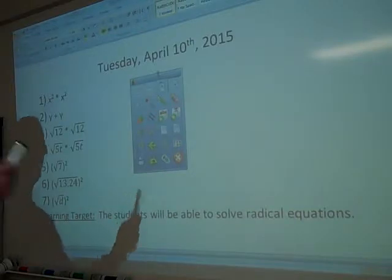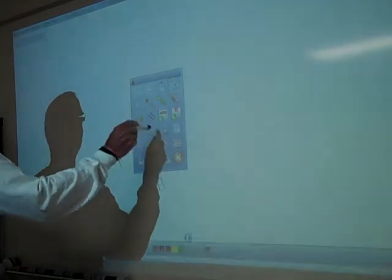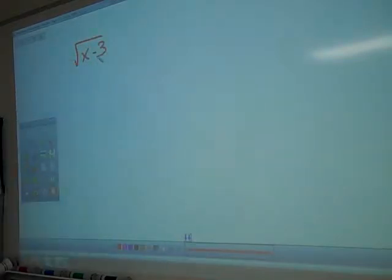When I gave you an equation back in the day, I'd always say, hey guys, what's our goal? And what would your answer be? Solve the unknown. How do you solve the unknown? Get the unknown by itself. How do you get it by itself? Inverse operation. So I'll give you an easy one. Square root of x minus 3 minus 2 equals 4.